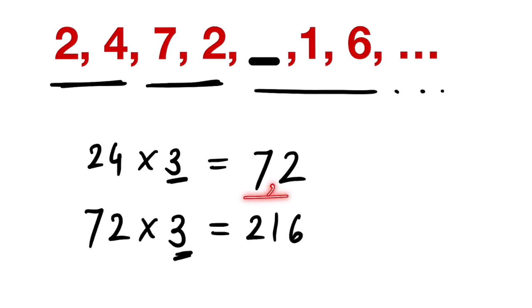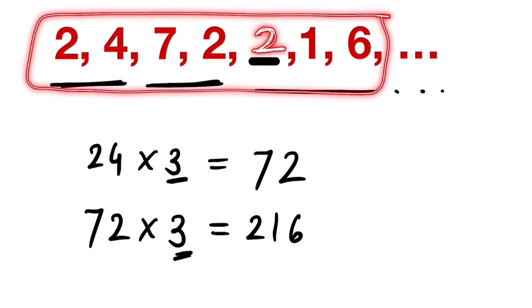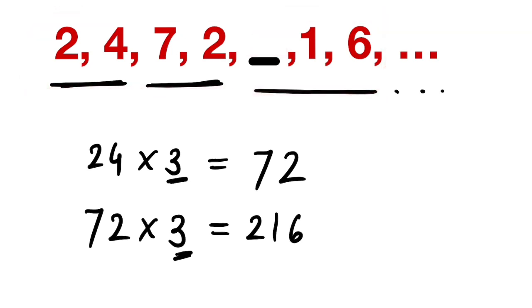So as you can see here, the next terms of the sequence after 2, 4 are 7 comma 2. And the next term will be 216, that is 2 comma 1 comma 6. So here we have 1 comma 6. So let us just put 2 over here. If you put this 2 over here, then we get the pattern in these terms. The answer to this sequence is 2.